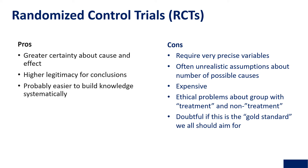On the con side, it requires very precise variables and often makes unrealistic assumptions about the number of possible causes. It can be expensive, and there are ethical issues around the group that receives the treatment versus those who do not. It's also debatable whether this is the gold standard we should all aim for — an RCT may be very useful for a specific trial like a new vaccine, but may not be appropriate for a more simplified community development intervention.